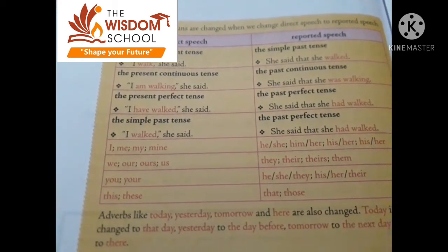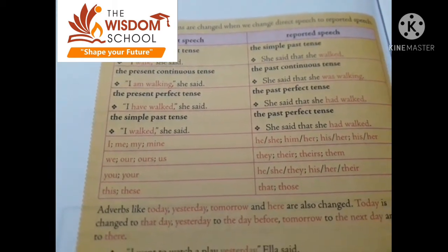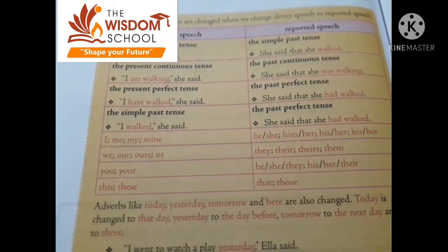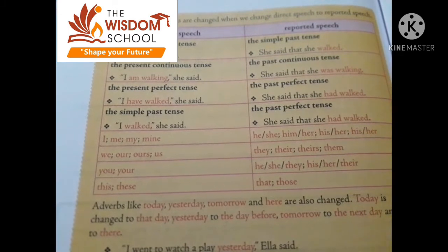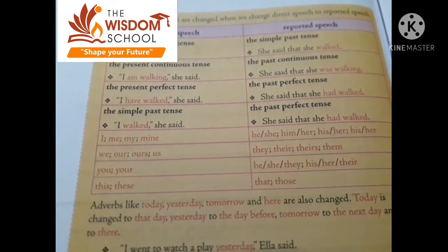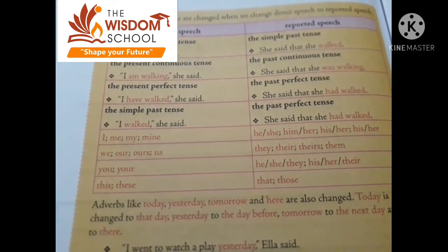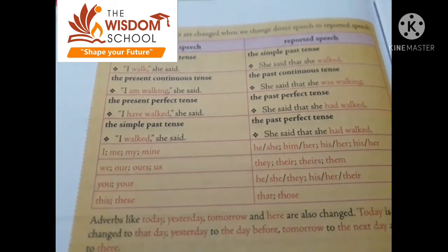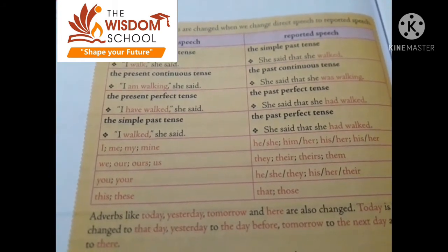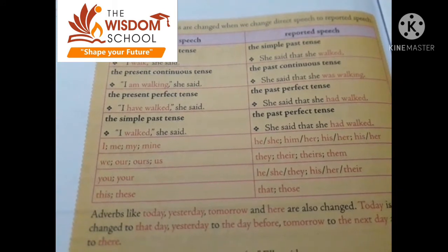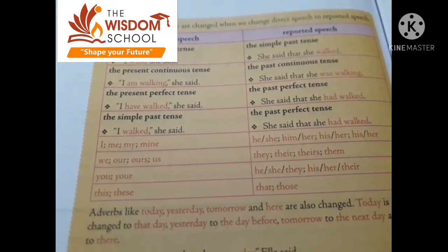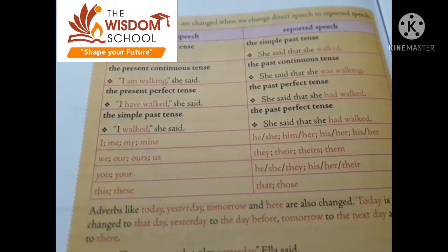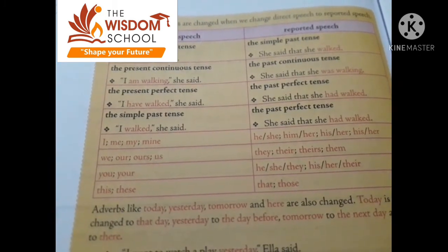Pronouns also change: 'I' and 'my' change to 'he/she,' 'him/her,' 'his/her.' 'We,' 'our,' 'ours,' 'us' change to 'they,' 'their,' 'theirs,' 'them.' 'You' and 'your' change to 'he/she/they' and 'his/her/their.'